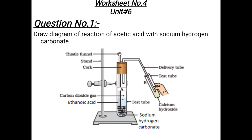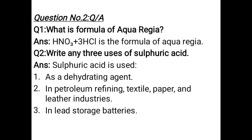Next is Worksheet number four. Question number one: you need to draw a diagram of acetic acid (ethanoic acid) and sodium hydrogen carbonate. Note that acetic acid is also called ethanoic acid — it is the scientific name. Question number two: what is the formula of Aqua Regia — this was explained during the lecture. Question three: write any three uses of sulfuric acid, which you have just studied. Thank you students.